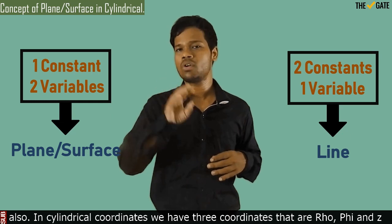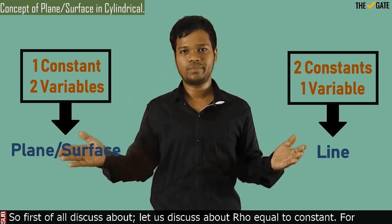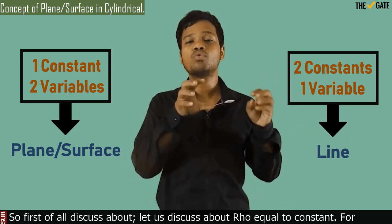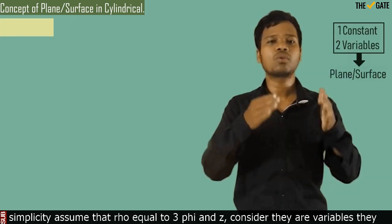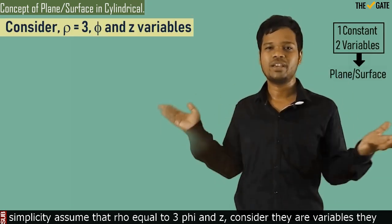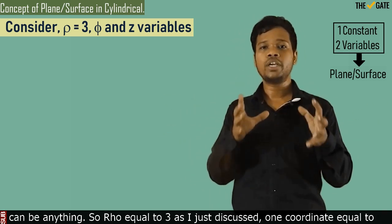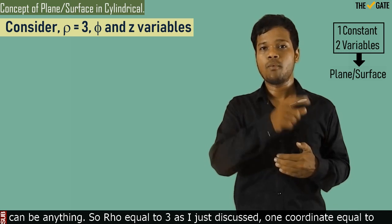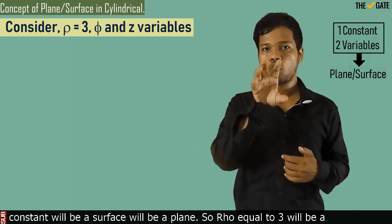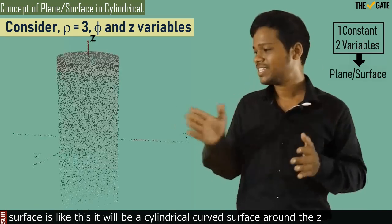In cylindrical coordinates, we have 3 coordinates: rho, phi, and z. Let us first discuss rho equal to constant. For simplicity, assume rho equal to 3, with phi and z as variables. Since one coordinate is constant, this will be a surface or a plane. So rho equal to 3 will be a surface like this.